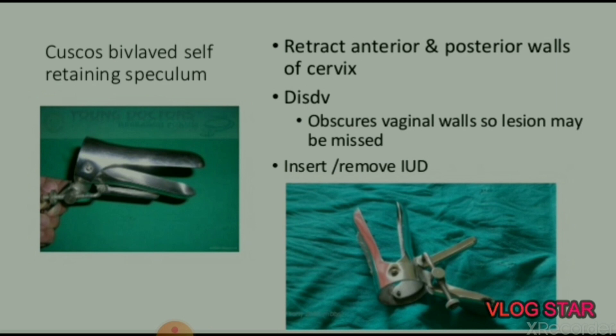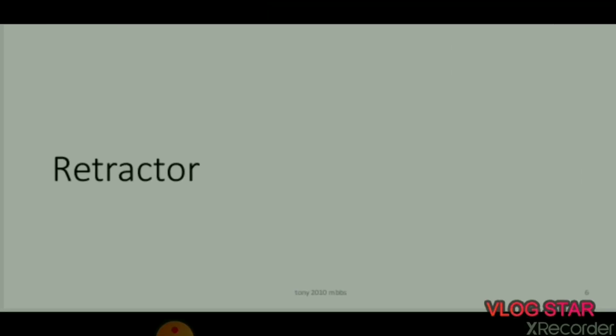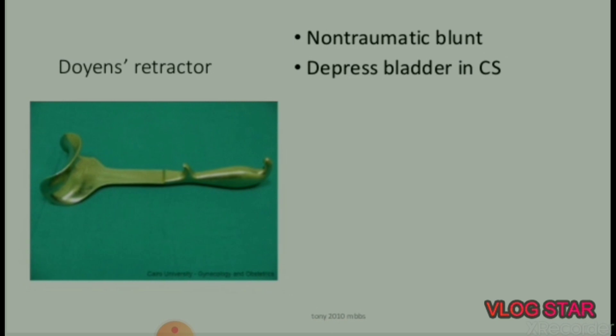Next instrument is Cusco's bivalve self-retaining speculum. It retracts anterior and posterior walls of the cervix. Disadvantage: it obscures vaginal walls so lesions may be missed. It is used to insert and remove IUD (intrauterine device).